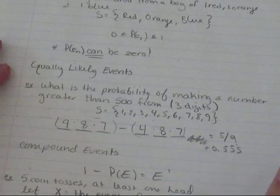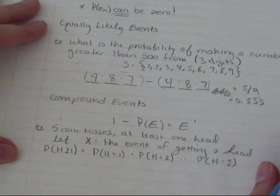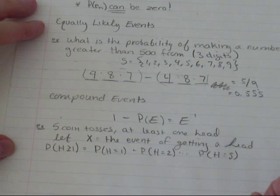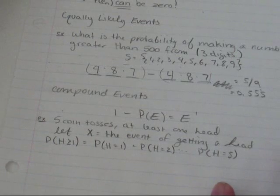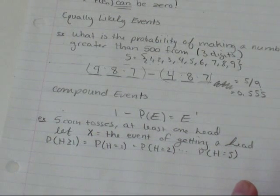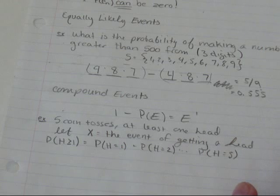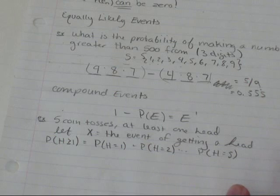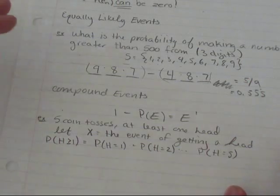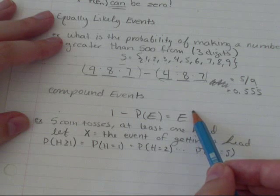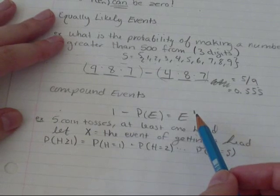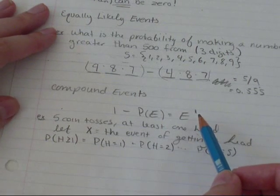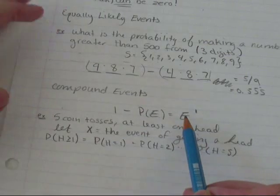In the next section, 7.3, it's called compound events. And what we're going to talk about here, it's called the complement. So, basically, it's the probability of not getting something. The complement to the probability of getting heads would be the probability of not getting heads or getting tails. And the complement is written as e to a little exponent of one. It's actually not an exponent of one at all. It's called e prime. So, one minus the probability of e equals e prime.